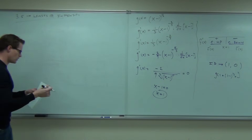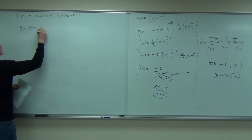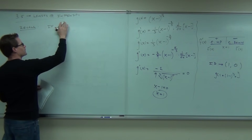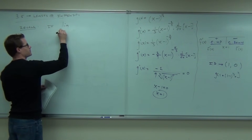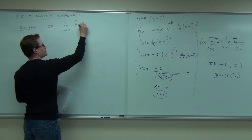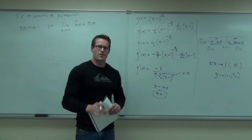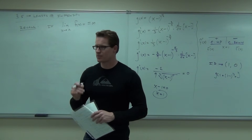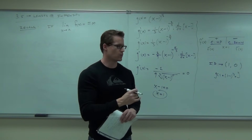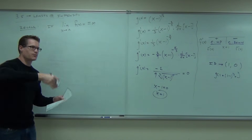Let me start with a recall. If the limit as x approaches a number of f(x) equals plus or minus infinity, that gives us an asymptote. When you could not cross out the problem on your limit, you had an asymptote. When you could cross it out, it's called a removable discontinuity — a hole. This gives you an asymptote at the value.